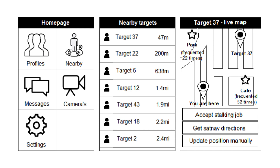One of the buttons is Accept Job. If this button is clicked, the surveillance team member will be expected to travel close to the target and surveil them using the covert cameras, the footage of which will be transmitted back to a control center using 5G. Once the user finishes surveilling, they will end the current job and find a new target to stalk.